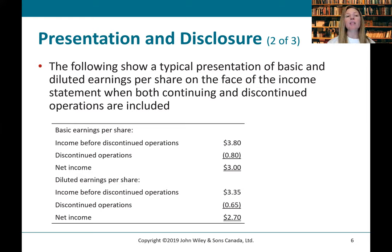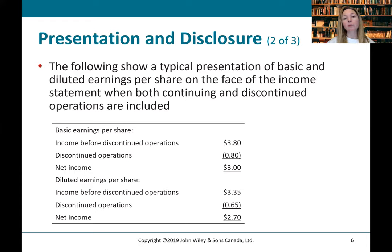You can see here we've got a section called basic earnings per share. We've got the earnings per share for income before discontinued operations, the earnings per share for discontinued operations, and the earnings per share for net income. And then below that, a section for diluted earnings per share, which shows the same amounts: income before continued operations, discontinued operations, and net income.